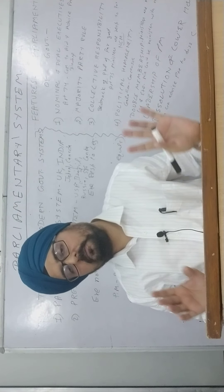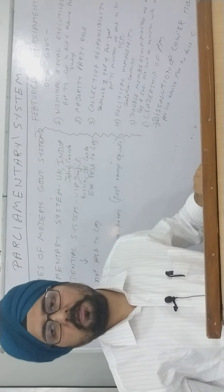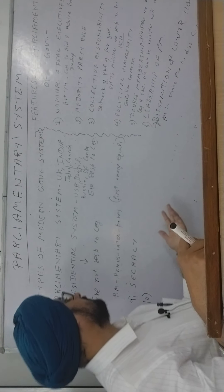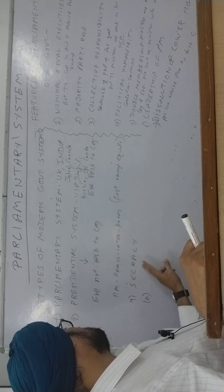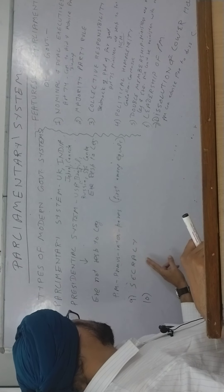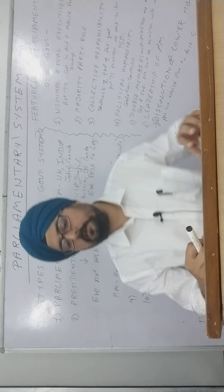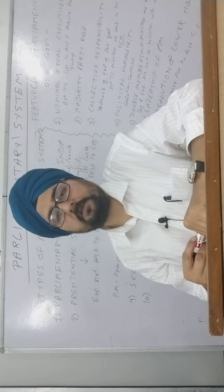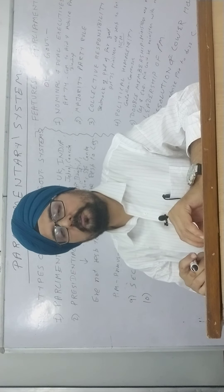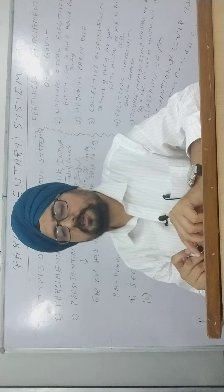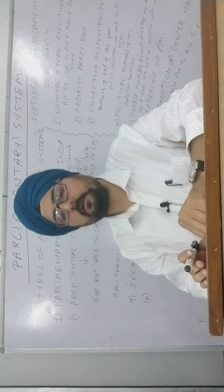So this is the difference between a presidential form of government and a parliamentary form of government. Now, the prime minister in India used to be called 'primus inter pares,' which simply means 'first among equals.'